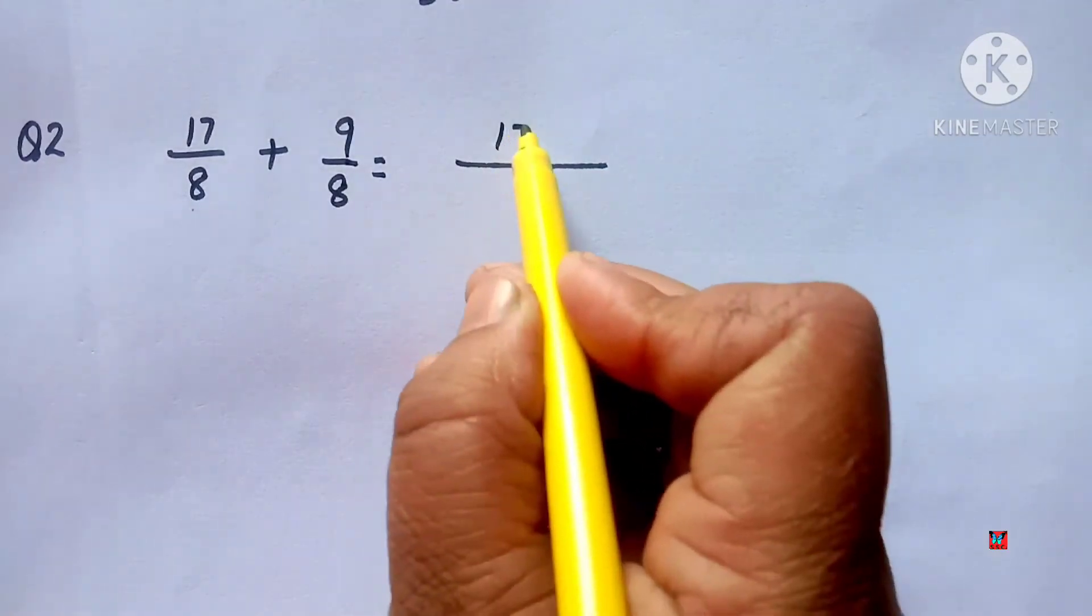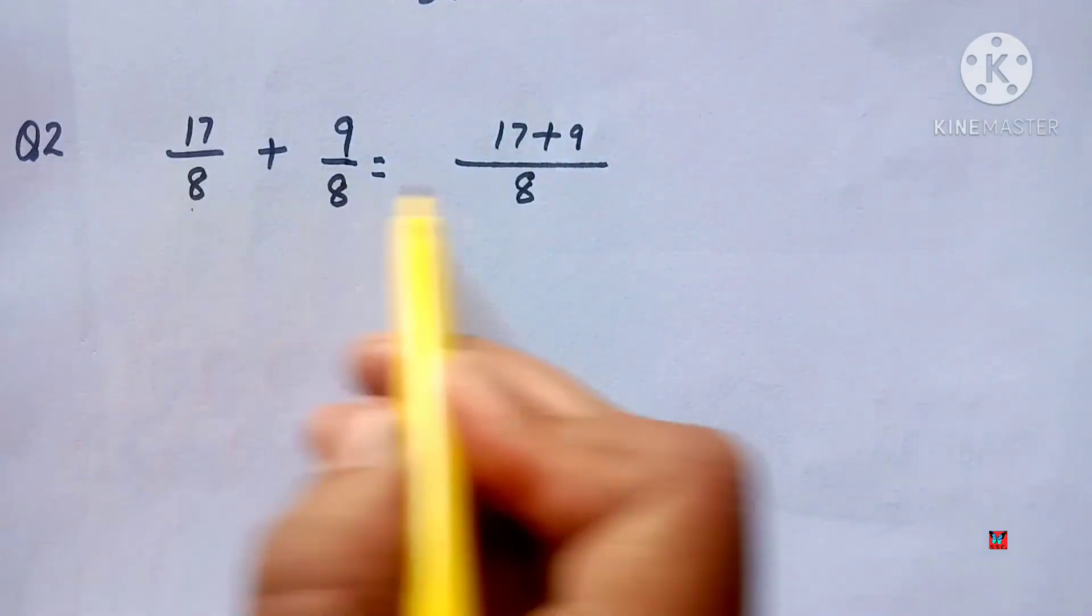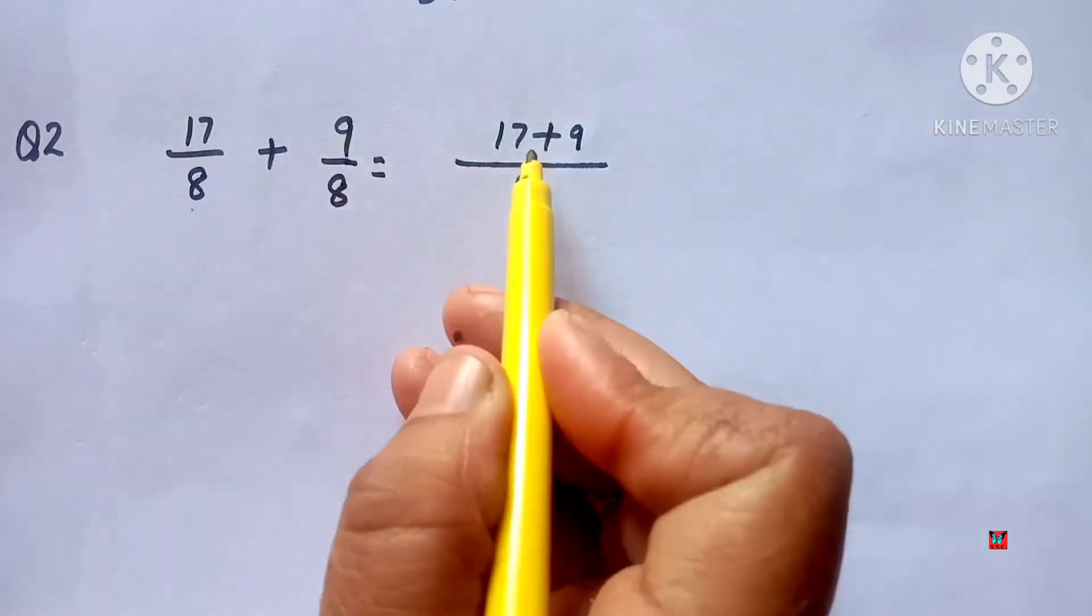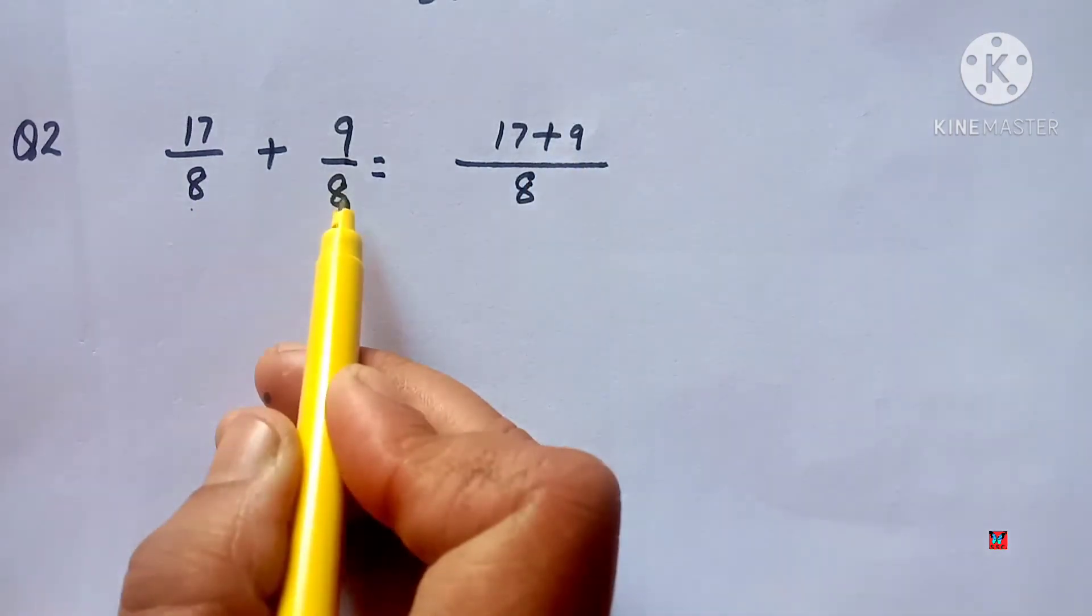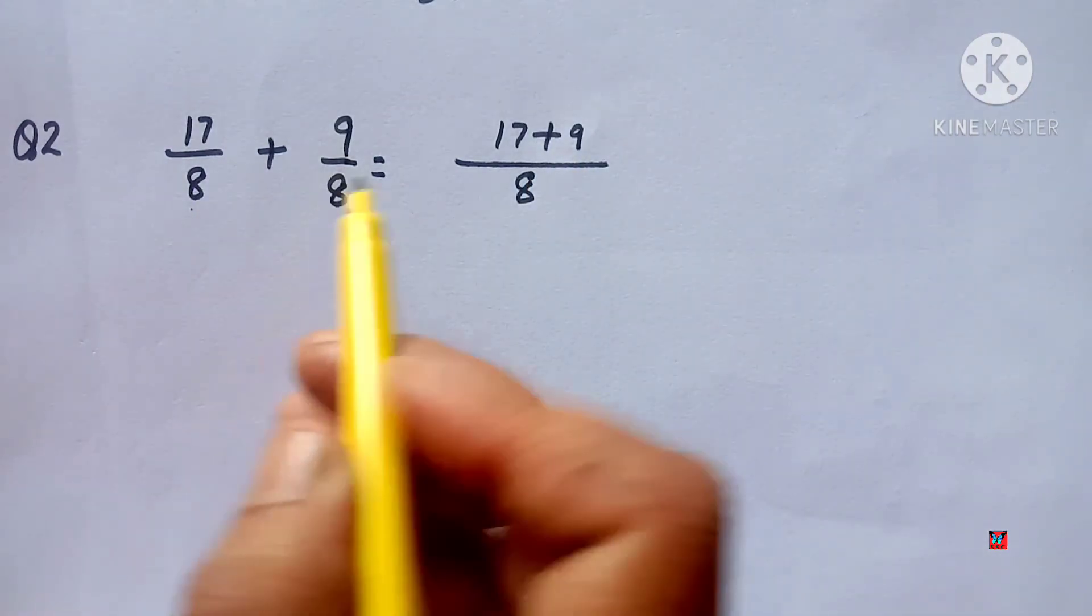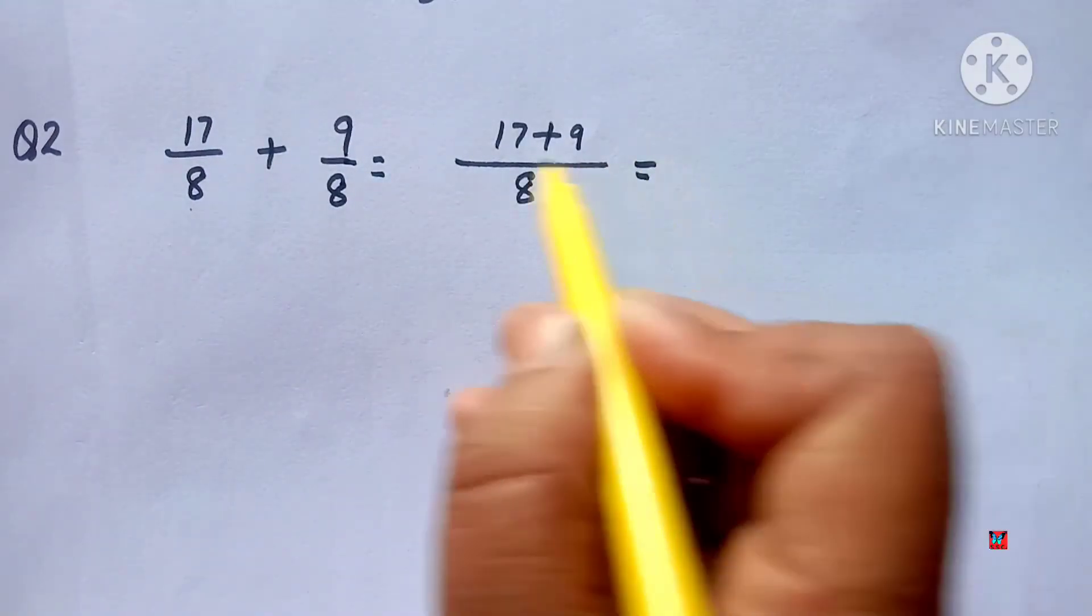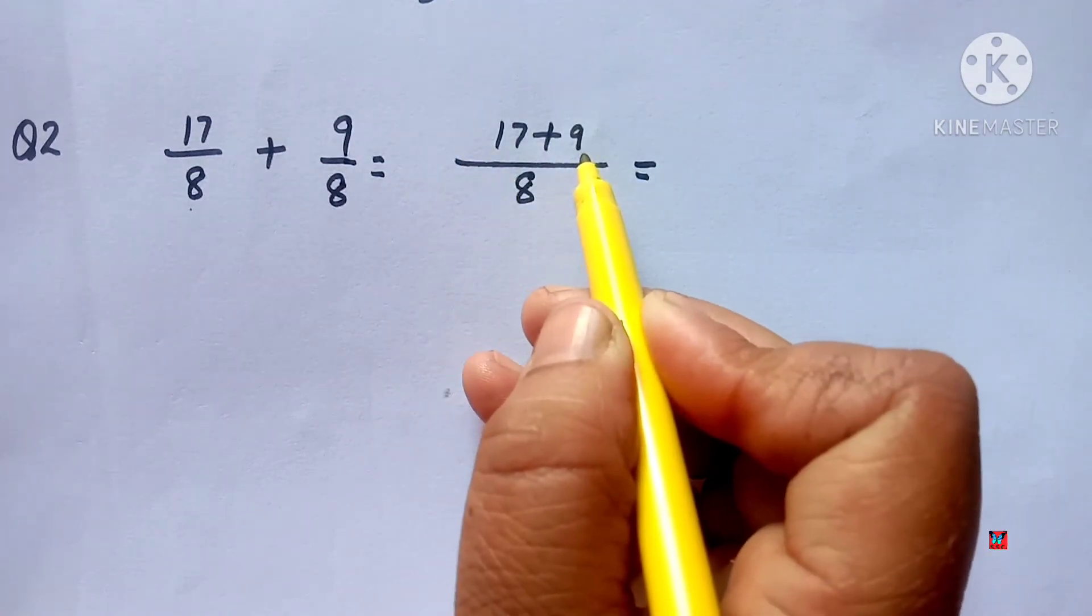Denominator as it is and write the numerators directly: 17 plus 9, denominator as it is. Direct addition of numerators when denominator is same. If numerators are different but denominators same, then do it this way.